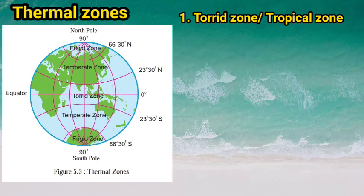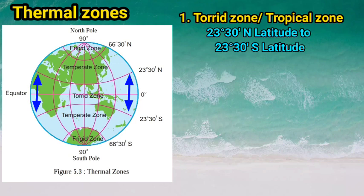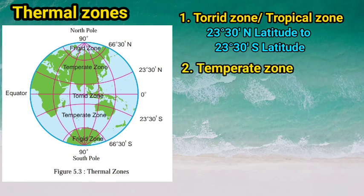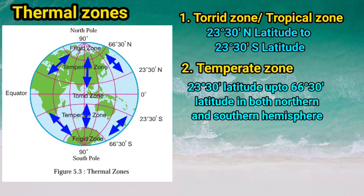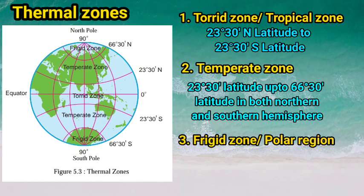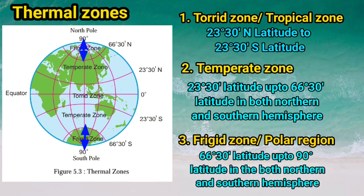The three thermal zones are: Number one, the Torrid Zone or Tropical Zone, which stretches from 23 degrees 30 minutes north latitude to 23 degrees 30 minutes south latitude. Number two, the Temperate Zone, which stretches from 23 degrees 30 minutes latitude up to 66 degrees 30 minutes latitude in both the northern and southern hemispheres. Number three, the Frigid Zone or Polar Region, which stretches from 66 degrees 30 minutes latitude up to 90 degrees latitude in both hemispheres.